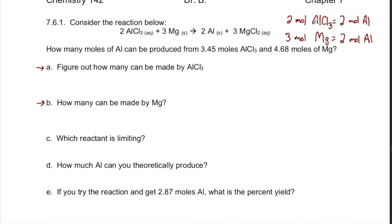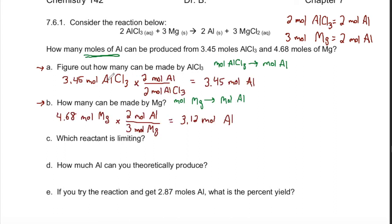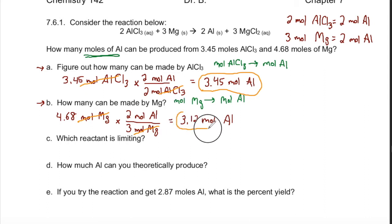Here I have listed the relationship between aluminum chloride and aluminum, and also the relationship between magnesium and aluminum. We need to figure out the moles of aluminum from both starting materials. Part A converts moles of aluminum chloride into moles of aluminum, and part B separately converts moles of magnesium into moles of aluminum. For 3.45 moles of aluminum chloride, using the molar ratio gives us 3.45 moles of aluminum. For 4.68 moles of magnesium, canceling moles of magnesium gives us 3.12 moles of aluminum.